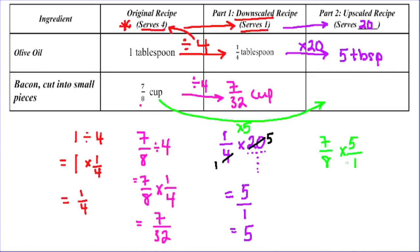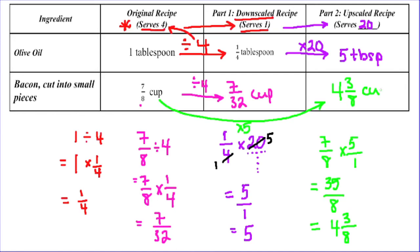Seven and 1 have no common factors, and 8 and 5 have no common factors, so there's no cross-cancelling. Putting these together: 7 times 5 is 35, and 8 times 1 is 8. Now in cooking we don't really see improper fractions — the norm is to use a mixed number. So I'm going to change 35 over 8 into a mixed number: 8 goes into 35 four times with a remainder of 3, giving us 4 and 3 eighths. I would require 4 and 3 eighths cups of bacon to make spaghetti carbonara for 20 people.